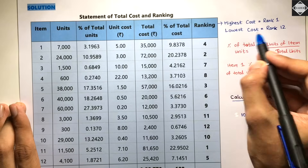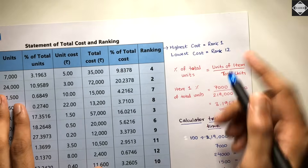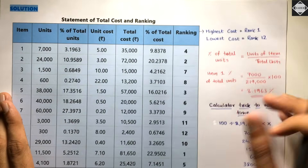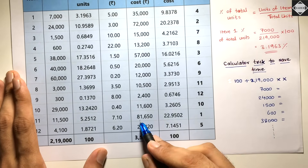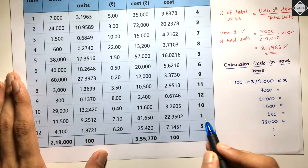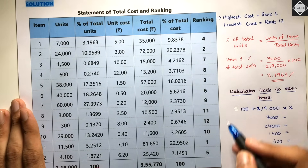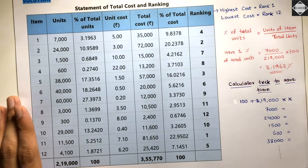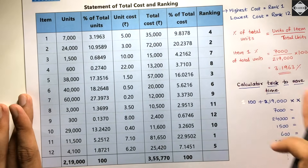Now do the ranking: the highest total cost gets rank 1 and the lowest gets rank 12 (since we have 12 items). For example, 22.95% cost is rank 1, then 20.23% is rank 2, then 16-something is rank 3, then 9-something is rank 4, and so on. After assigning ranks, you will rearrange all items in rank order.